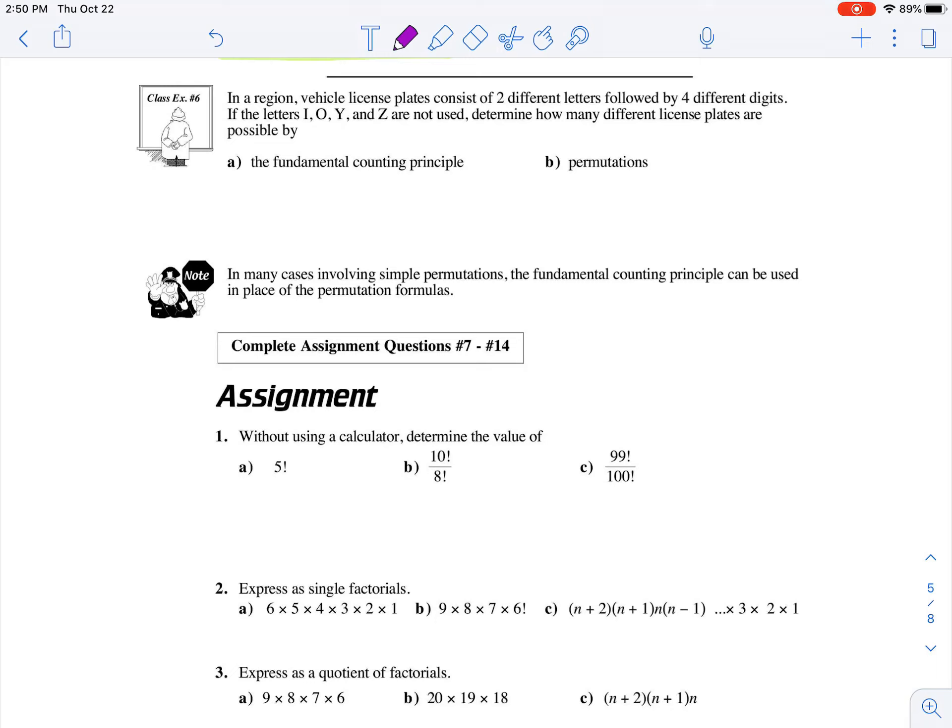In a region, vehicle license plates consist of two different letters followed by four different digits. If the letters I, O, Y, and Z are not used, determine how many different license plates are possible by the fundamental counting principle.